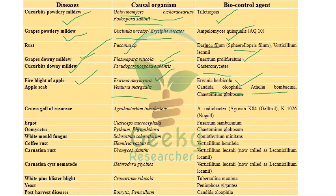Also for apple scab: Athelia bombacina and Chaetomium globosum — Chaetomium globosum is a very important specific biocontrol agent recommended against apple scab. For crown gall of Rosaceae caused by Agrobacterium tumefaciens, the biocontrol agent is Agrobacterium radiobacter — Agrocin K84 (Galltrol), or K1026 (Nogall). For ergot, Fusarium sambucinum is used as a biocontrol agent.